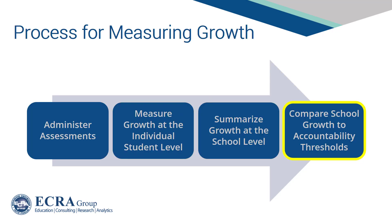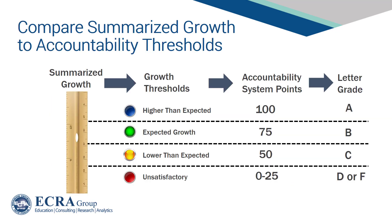Once a summary measure of student growth is derived, it will be compared to accountability thresholds to link into the accountability system. There is limited information available at the time of this recording as to how points will be awarded to various levels of student growth. That said, ISBE is likely to categorize growth and award points to various categories, which can then be combined with other components of the evaluation framework beyond growth.